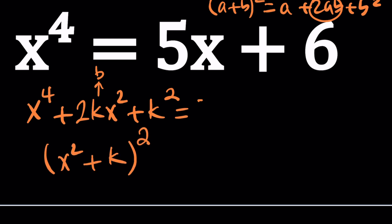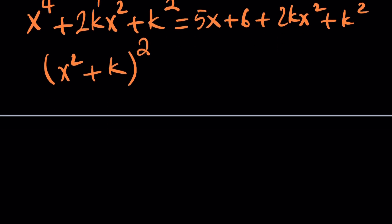What about the right hand side? Well, I got to add that first. Let's go ahead and add the same thing to both sides, which is 2kx squared plus k squared. Now, k is a number I need to determine so that the left hand side and right hand side are both perfect squares. Because if one of them is a perfect square, the other one also has to be. Now, right hand side is a quadratic, which is nice. So we can write it as 2kx squared plus 5x plus 6 plus k squared.